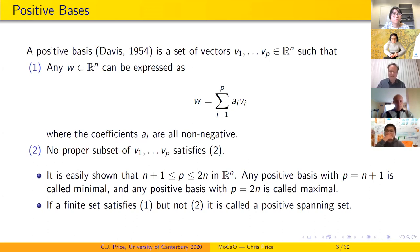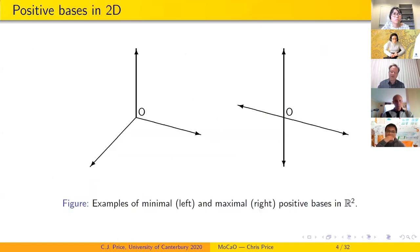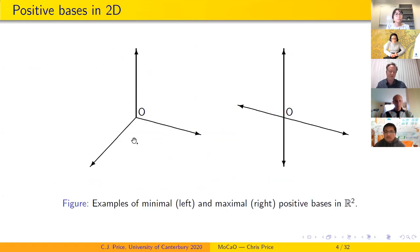Here are simple examples of positive bases in two dimensions. On the left we have a minimal positive basis of three directions, and on the right we have a maximal positive basis of four directions. Like all maximal positive bases, you see pairs of opposed vectors.